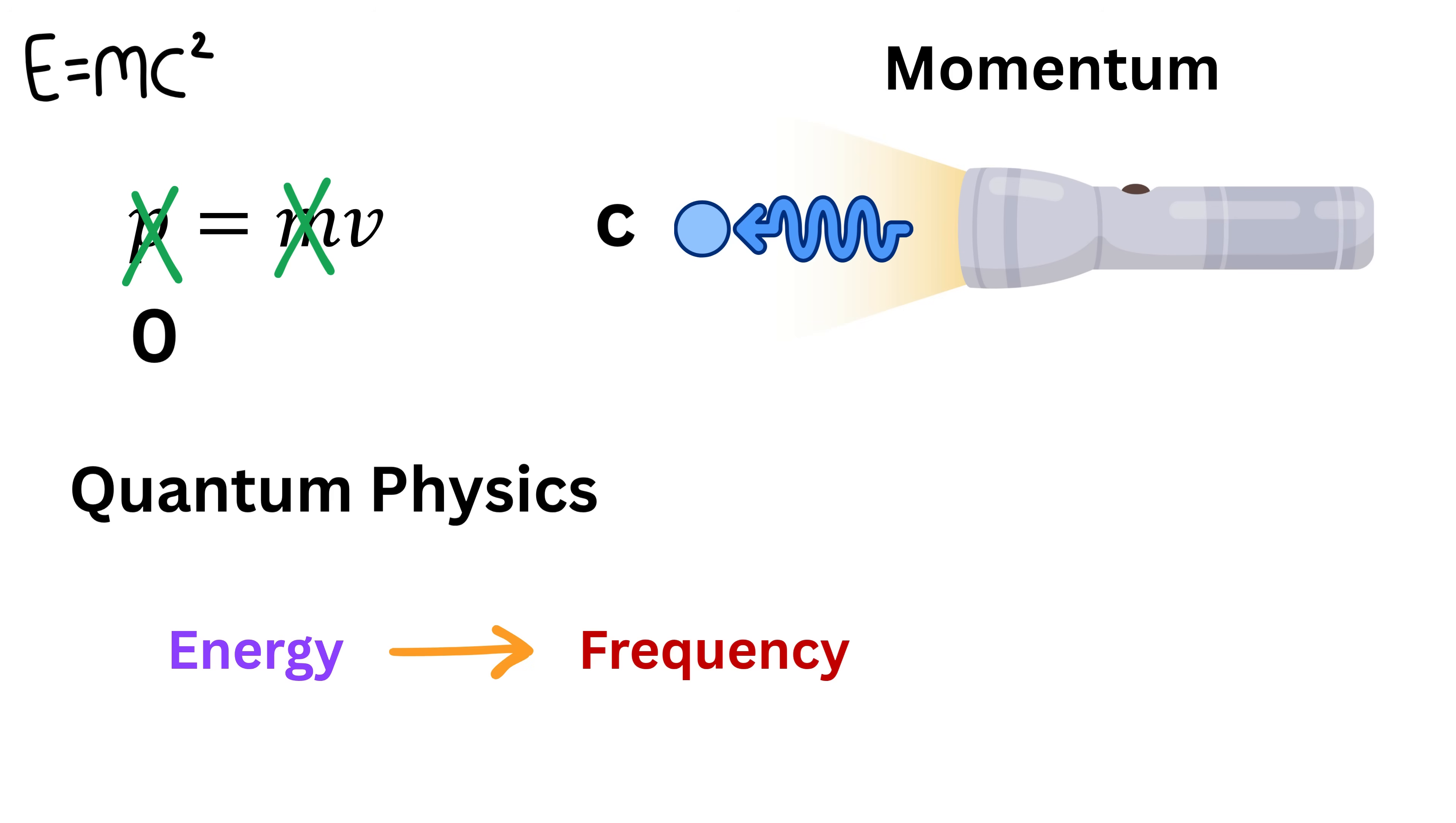He introduced a very simple relationship: energy is equal to a constant called Planck's constant multiplied by the frequency. In symbols, this is written as E equals h times f, where E is energy, h is Planck's constant, and f is the frequency of the photon.